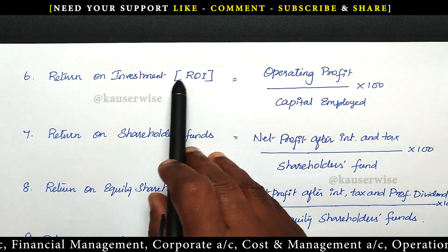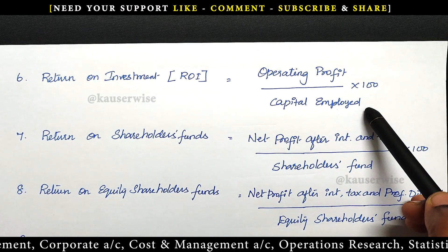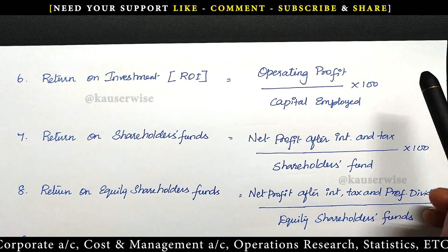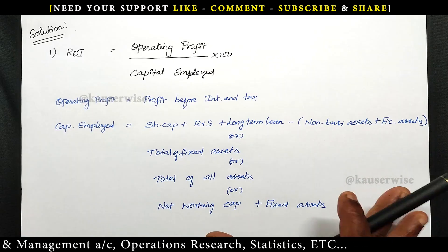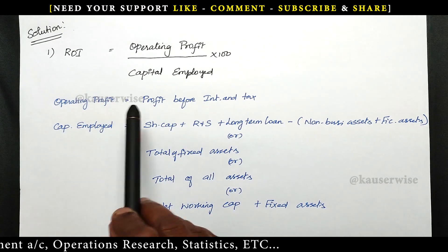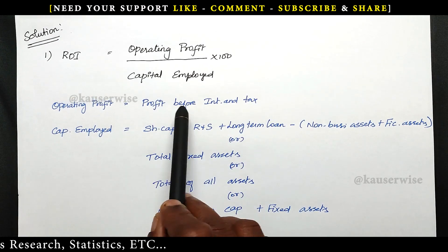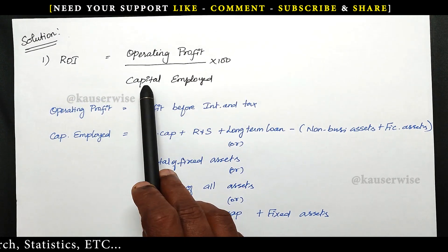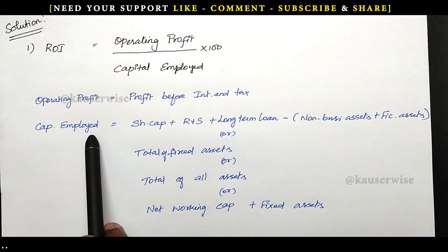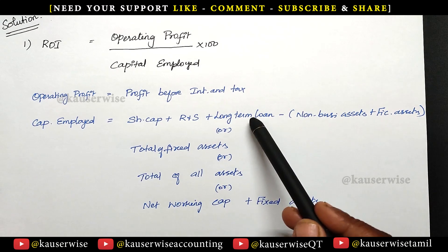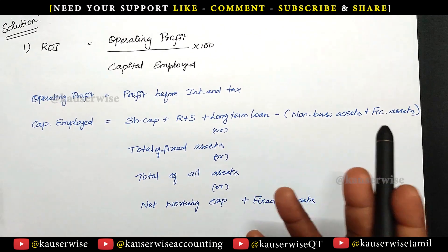The first one is return on investment. The formula is operating profit divided by capital employed into 100. I will tell you what is the meaning of operating profit and capital employed. Operating profit means earnings before interest and tax — you can find this from the income statement. Capital employed can be calculated based on 4 different formulas given by 4 different authors, so you can follow any one and you will be getting different answers.